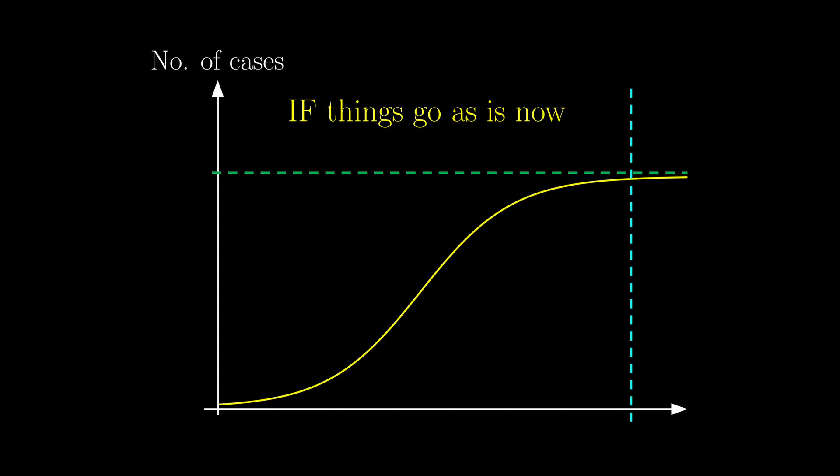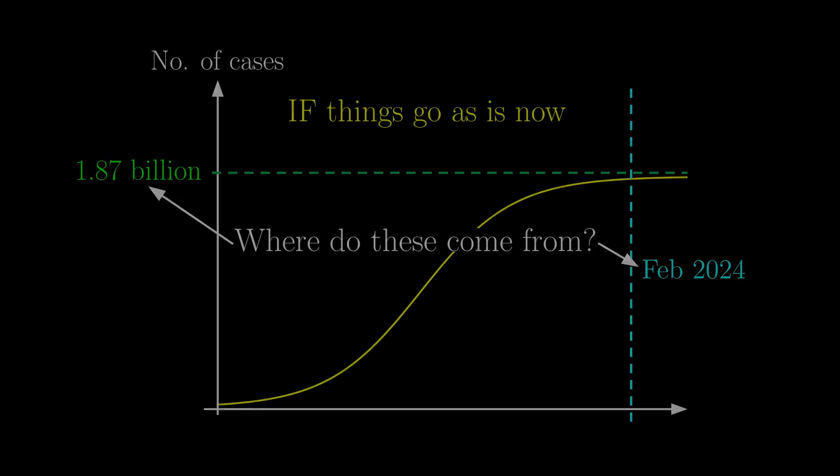On the hopefully unlikely assumption that things go as is now, the plateau is somewhere around 1.87 billion, and the approximate time frame for the entire epidemic is 4 to 5 years. But you want to know where these numbers come from and more importantly, whether you should trust these numbers.